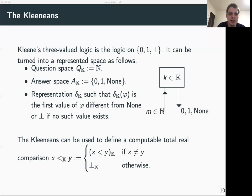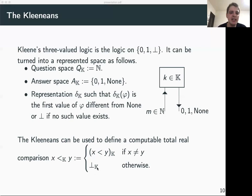One important example is that we can use the Kleenians to define a total computable real comparison, which is defined as follows: if X is not equal to Y, it returns the Boolean value; and if X is equal to Y, it is defined as the bottom element. Using the rational representation for real numbers seen previously, a computable realizer for this function can be easily defined.